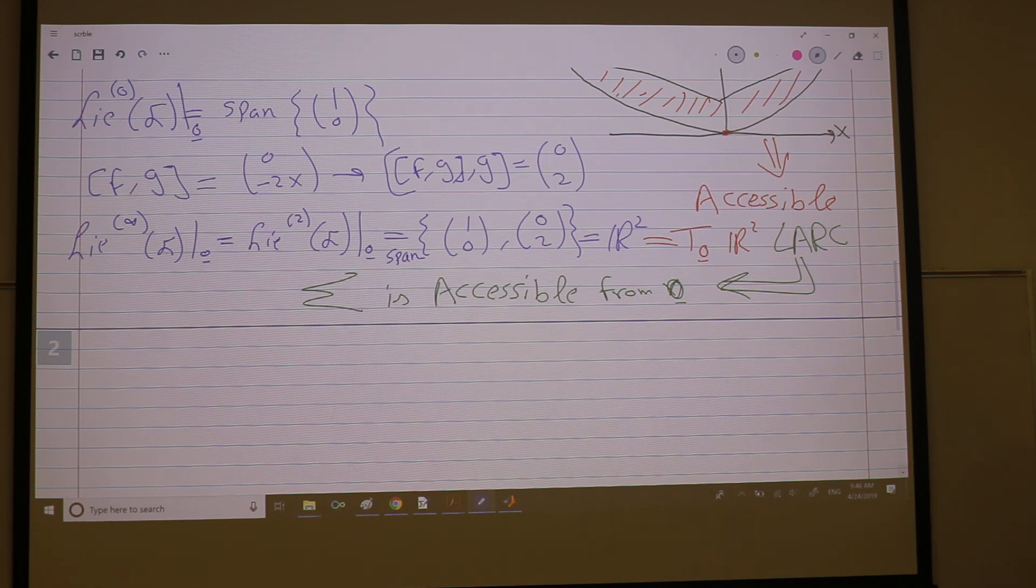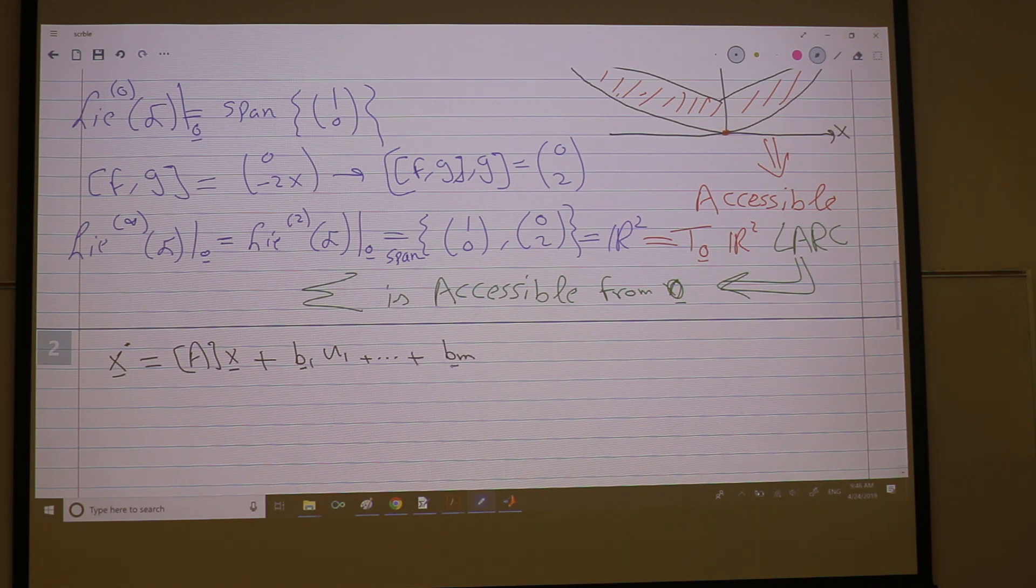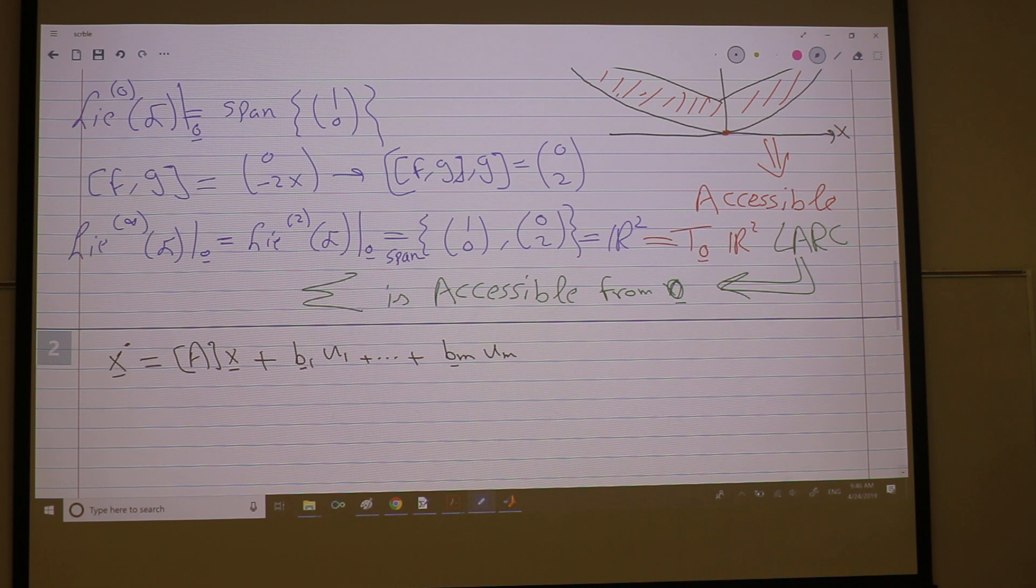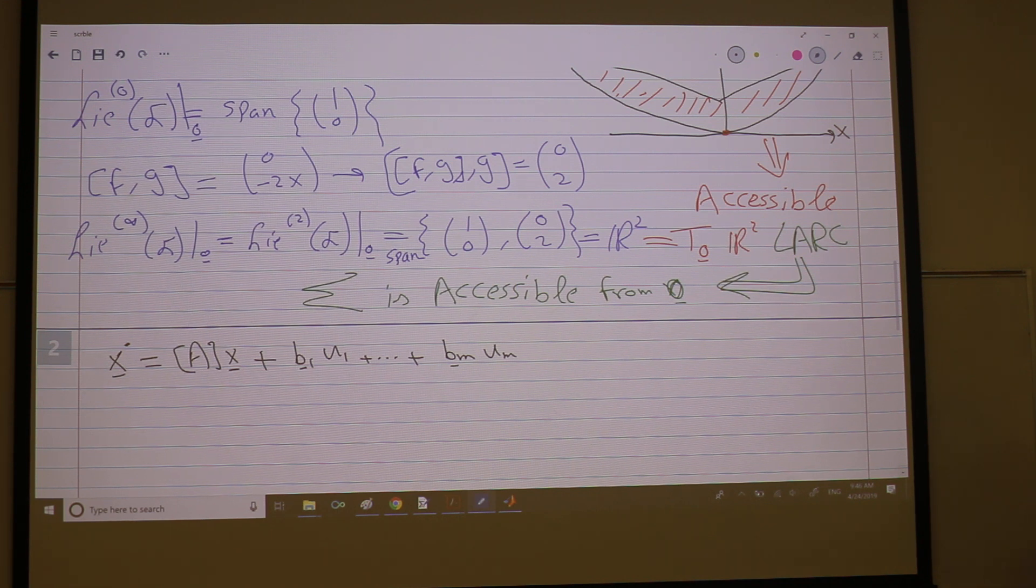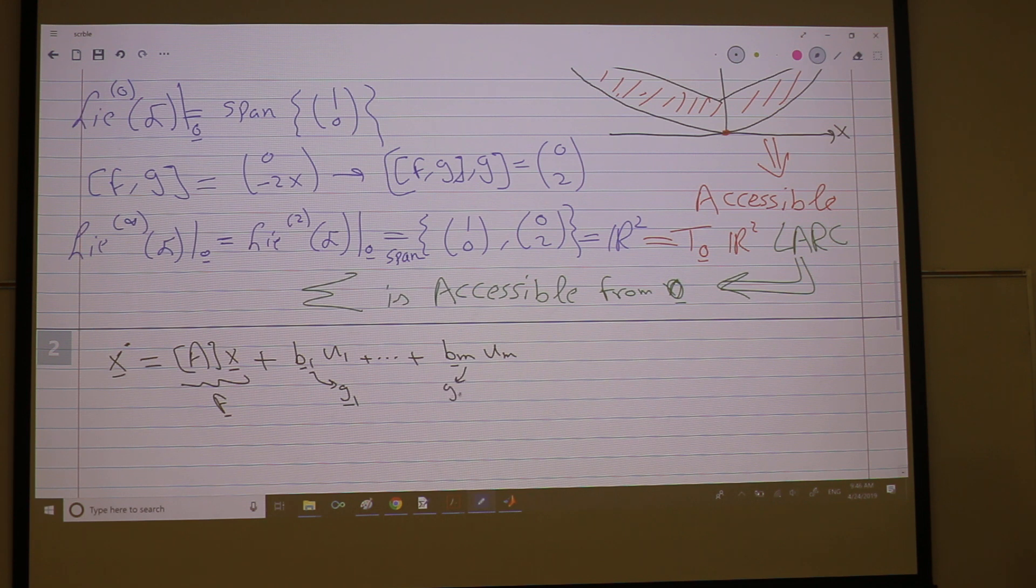Let's consider this very familiar example. X dot equals AX plus B1 U1 plus Bm Um. This is my F, right? This is my G1, this is my Gm, and they are constants. The G's are constants, right?